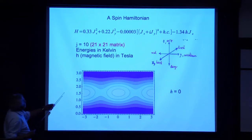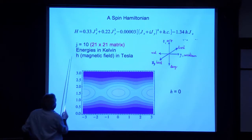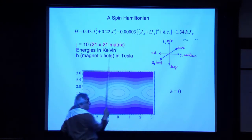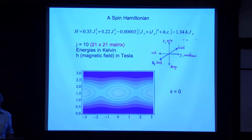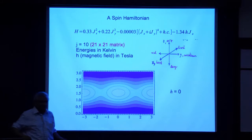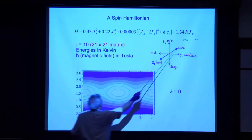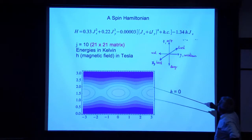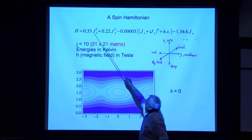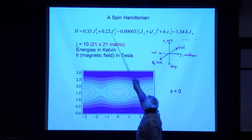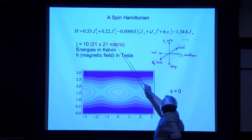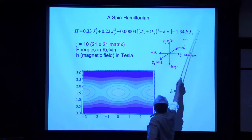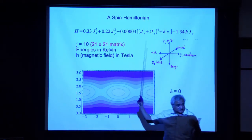I want to see what the energy surfaces of this Hamiltonian look like. First of all, this term is very, very small — you can see how tiny its coefficient is — and it's included for honesty and completeness, but to understand what I'm going to say, we can ignore it. This last term is a magnetic field, and let's begin by putting that magnetic field to zero. If J points along the x-axis, the energy is large. If J points along the y-axis, the energy is positive but not as large. And if it points along the z-axis, both terms are zero, and the energy is zero — that's the minimum.